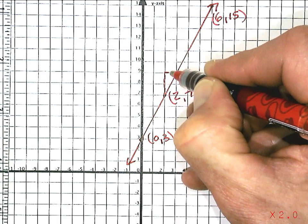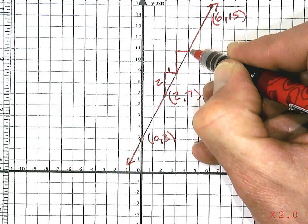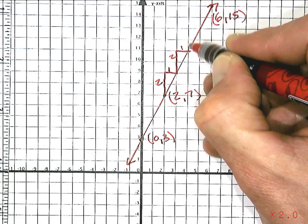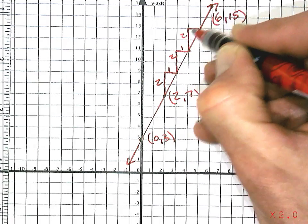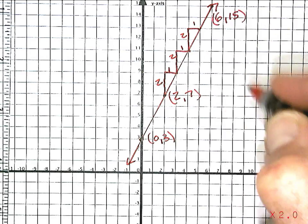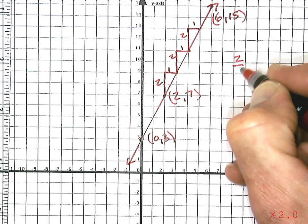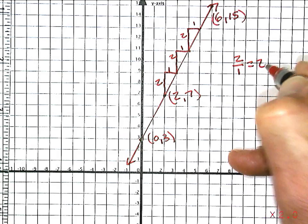It goes up 2 over 1, up 2 over 1, up 2 over 1, etc. So the slope is up 2 over 1, or the slope is 2.